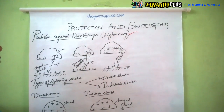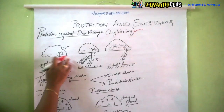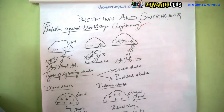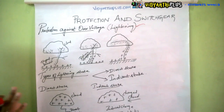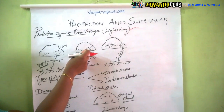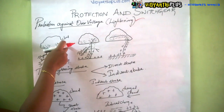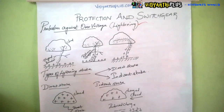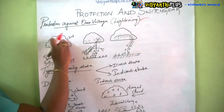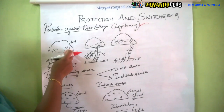Now let us see what happens due to lightning and how lightning occurs. Lightning occurs because of electrical discharge in air between two clouds, between charge centers of the same cloud, or between a cloud and the earth. These are the main reasons for lightning occurring.